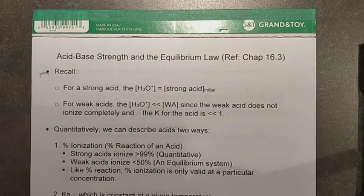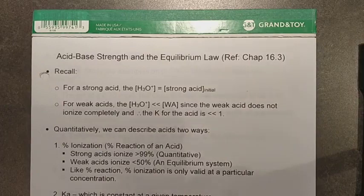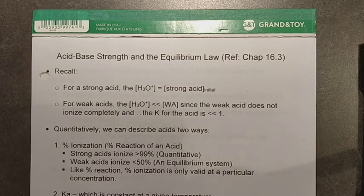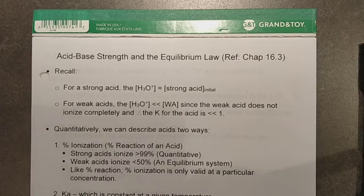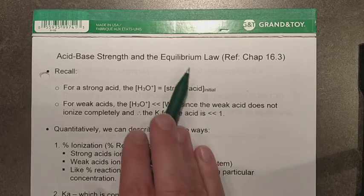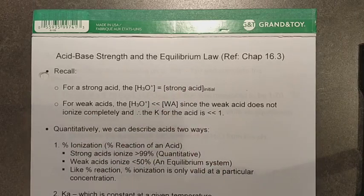Let's finish off chapter 16 and all of this acid-base stuff. The last thing we really need to look at is tying our acid-base strength to the equilibrium law expressions — in other words, taking everything we've learned about Bronsted-Lowry acid-base, figuring out the proton transfer, making the balanced equation, and now applying ICE tables and equilibrium law. So we're really just getting into the math of it now.